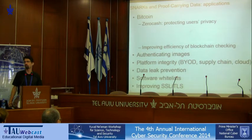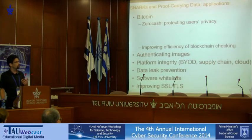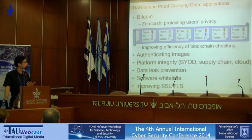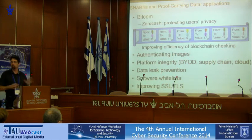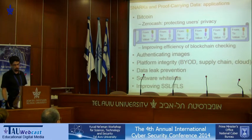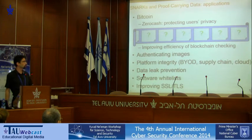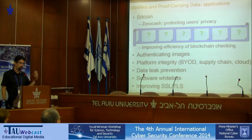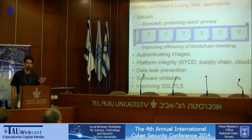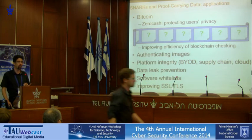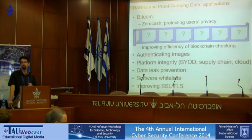Let me throw a few buzzwords at you for some of the applications we already or soon will be pursuing. One is in the realm of Bitcoin — we have a working system that improves the privacy of Bitcoin. In Bitcoin, there's a blockchain that tells everyone about every transaction that has ever happened, so anyone can know who you paid, how much, and when — it's like posting all your credit card statements online. Using SNARK proofs, we can hide all of that information so an outsider cannot learn anything, and yet the invariants that you care about in a currency are still preserved. We can use this for authenticating images, addressing the supply chain challenge in some scenarios, improving data leak prevention, and numerous other applications. The greatest challenge, I think, is finding additional applications where these kinds of tools and formalisms can be of help.